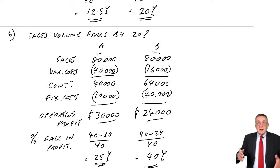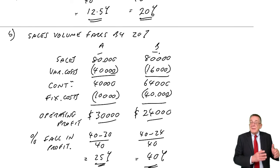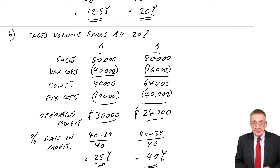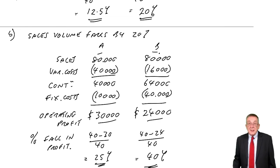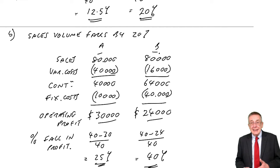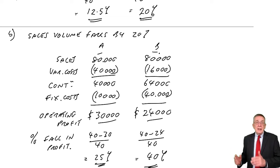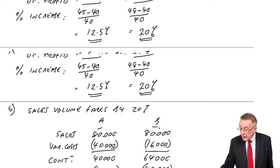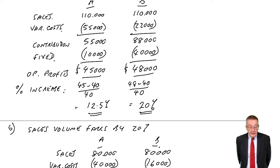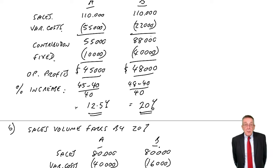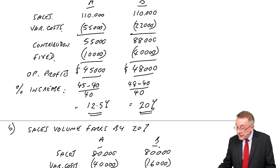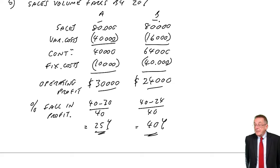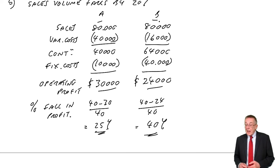Fixed costs in all cases create more risk. With financial gearing, the fixed costs exist because of the way we've raised the finance. With operational gearing, the risk increases because of the way we've structured our costs. It is quite practical: if sales are increasing, then the more fixed costs you've got, the better — profits will increase more, which is great. But the risk is that if sales decrease, the more the fixed costs are, the more the profits will suffer. If sales are going down, you'd prefer your costs to be variable.